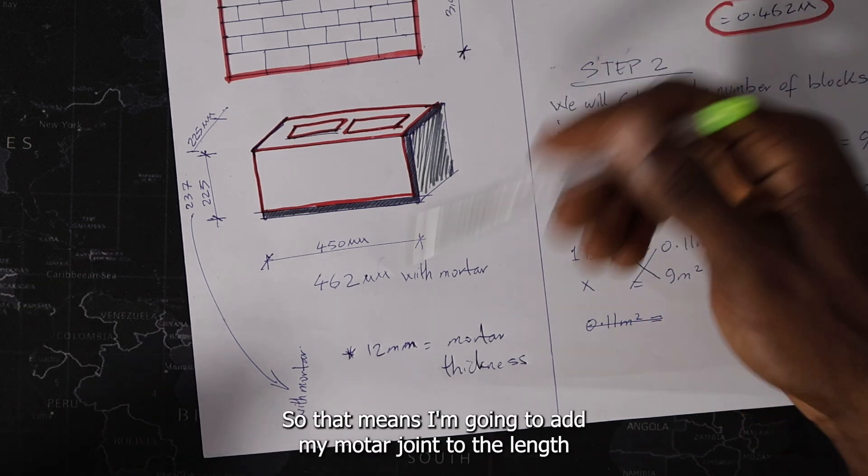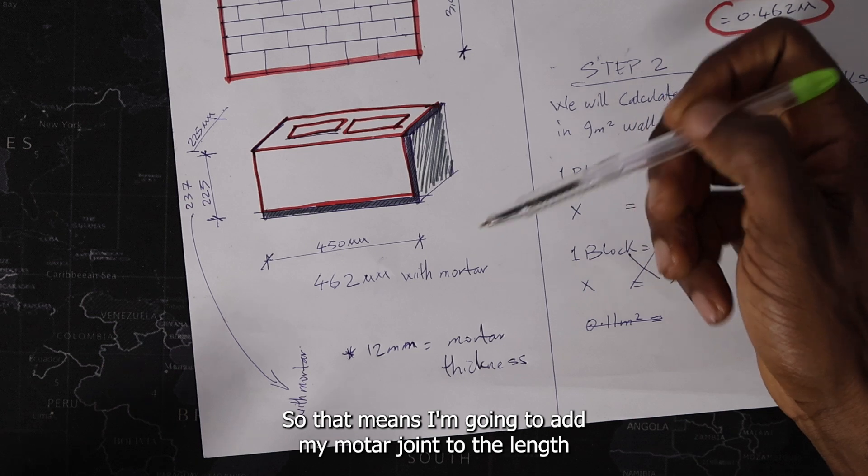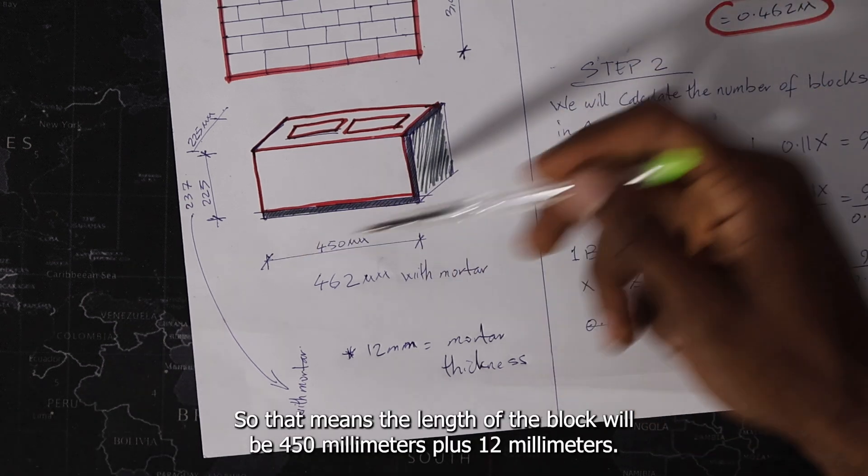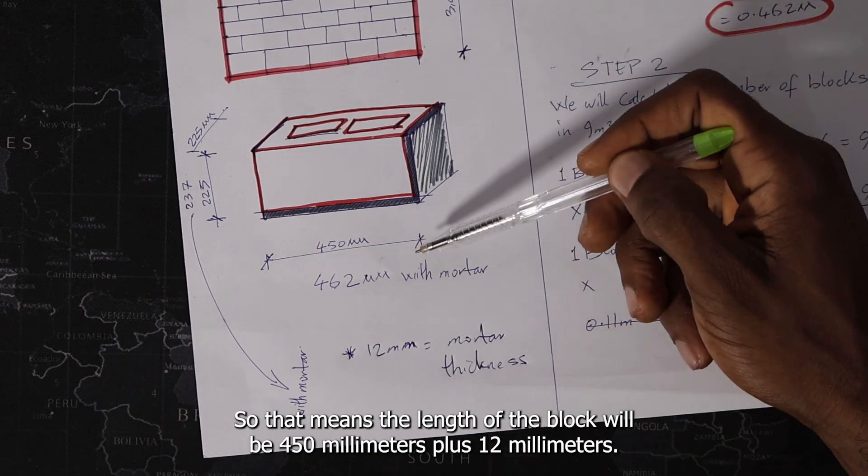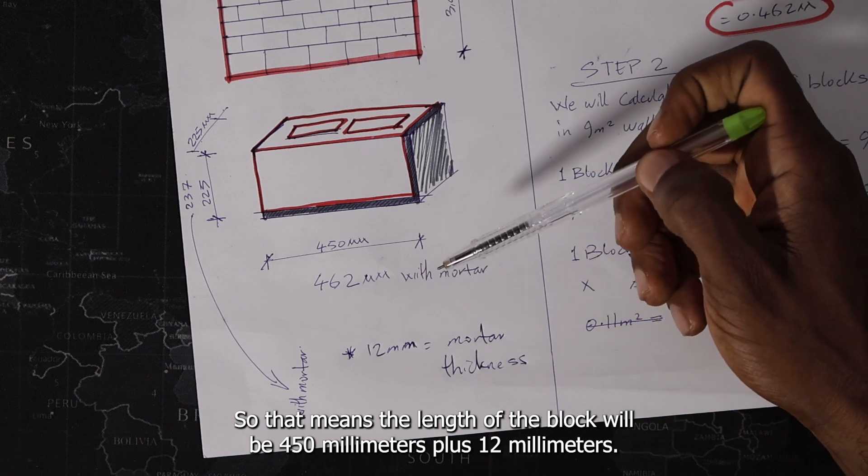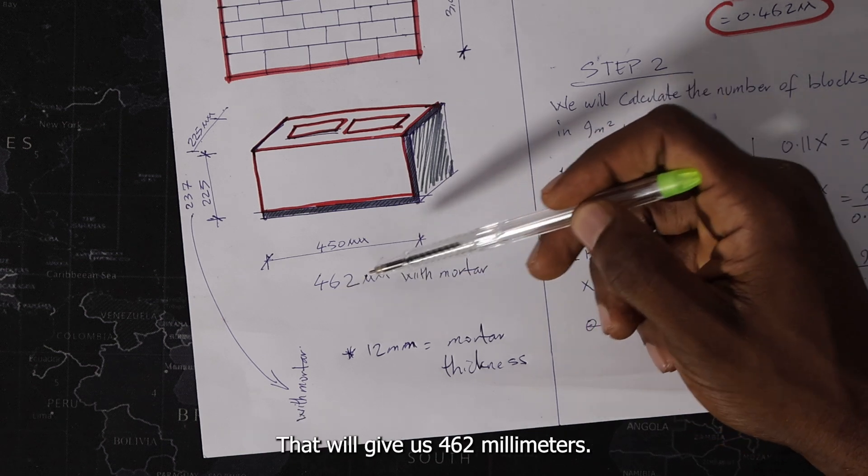So that means I'm going to add my mortar joint to the length and the height of the block. So that means the length of the block will be 450 millimeters plus 12 millimeters. That will give us 462 millimeters.